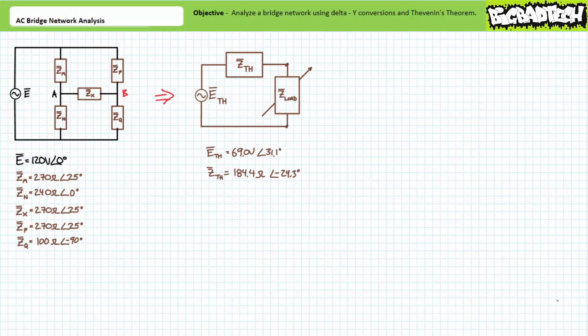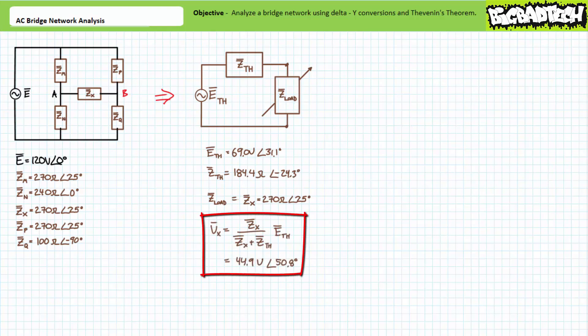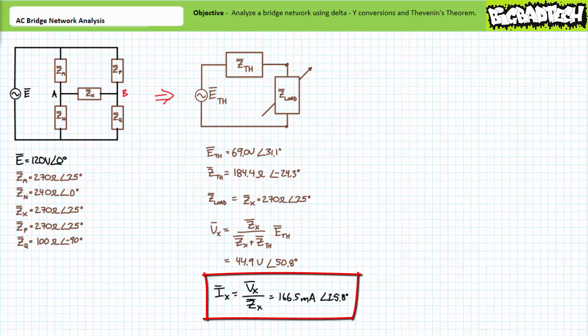When bridge impedance ZX is our load, the Thevenin equivalent circuit is a series combination of ETH at 69 volts at 31.1 degrees and ZTH at 184.4 ohms at negative 24.3 degrees. Substituting our load ZX at 270 ohms at 25 degrees, this simple series circuit is much easier to solve than the original complex bridge circuit. Applying the AC voltage divider rule, the voltage across the load is 44.9 volts at 50.8 degrees. Applying Ohm's law, current through the load is 166.5 milliamps at 25.8 degrees — the same results obtained using the delta-to-Y conversion.